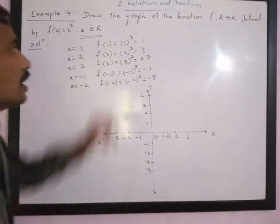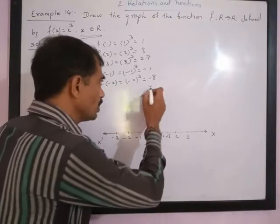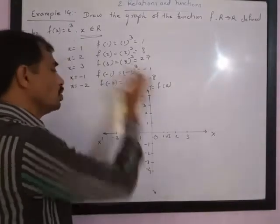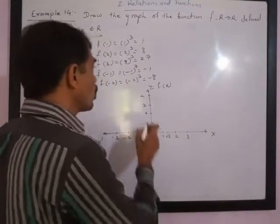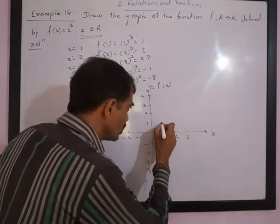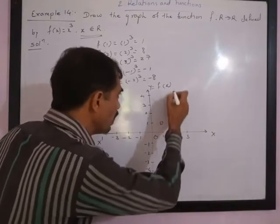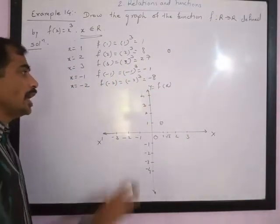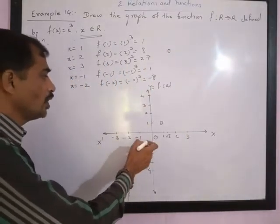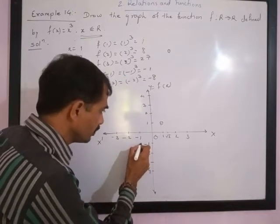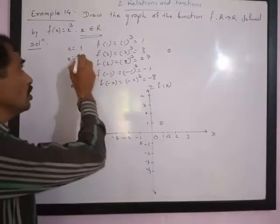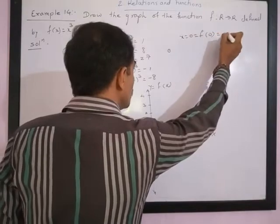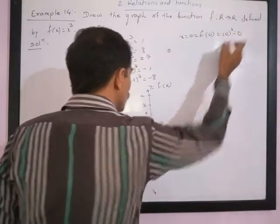If x equals 1, we get f(1) = 1. We take f(x) values on the y-axis and x values on the x-axis. So for x = 1, y = 1. For x = 2, f(2) = 8, which is a very large value. For x = 0, f(0) = 0 cube = 0, so for 0 we get 0.